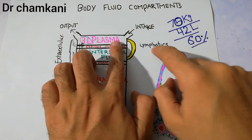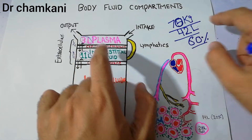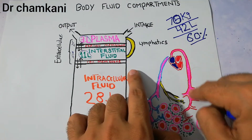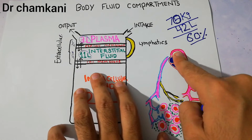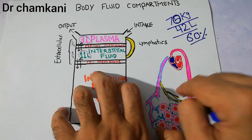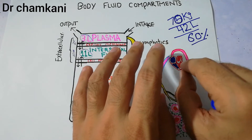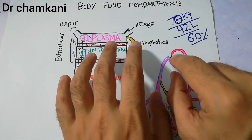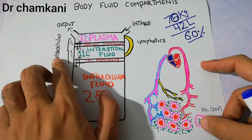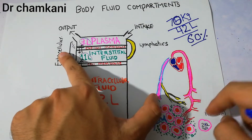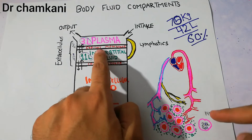The first compartment is the plasma, which is around 3 liters. The heart pumps blood to the tissues, oxygenating them, and deoxygenated blood returns to the heart to be reoxygenated in the lungs. Plasma is the fluid portion of the blood — or the component of blood other than the cells — and it is basically part of the extracellular fluid compartment, present outside the cells.